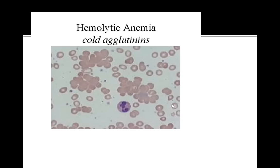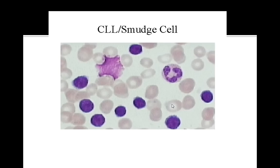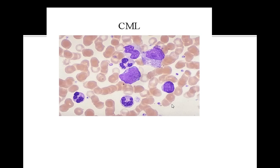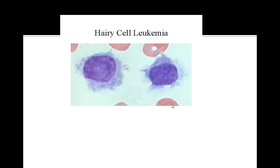All these peripheral smears are definitely helpful. Cold agglutinins are beneficial when evaluating types of hemolysis and different anemias. There's a smudge cell, common in CLL. Auer rods are seen in AML. CML has its own findings, and hairy cell leukemia uses the TRAP stain as the important diagnostic marker to remember.